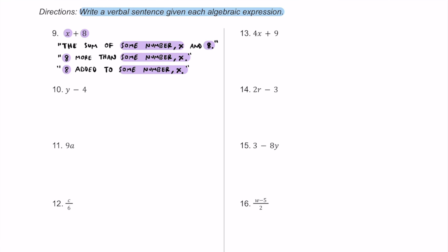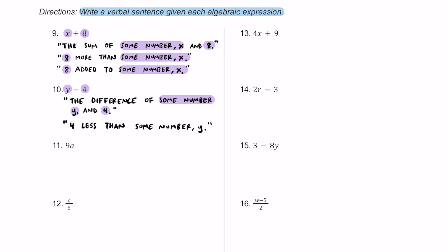For number ten, we have the expression y minus four. Y and four are our two pieces. One verbal sentence is: the difference of some number y and four — that word 'difference' means subtraction. Or we can write: four less than some number y. Or: four subtracted from some number y.